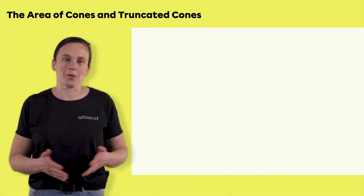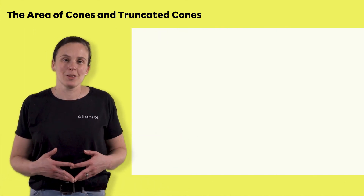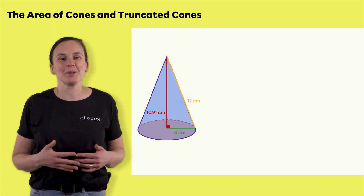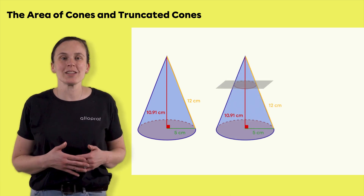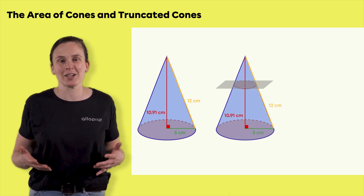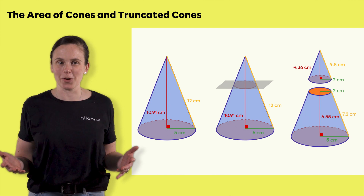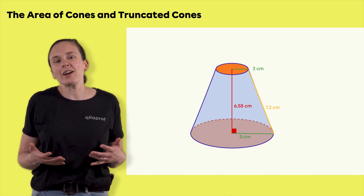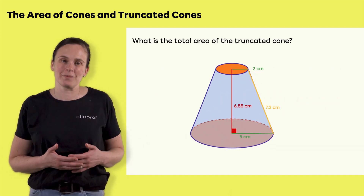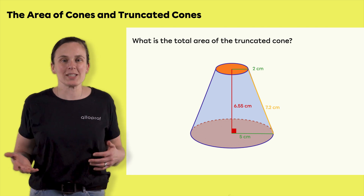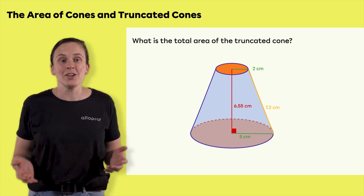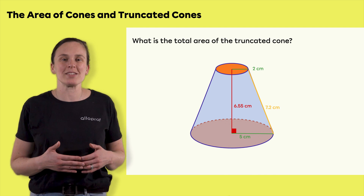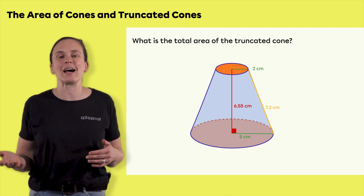Let's look at a second example. We will cut a cone using a plane parallel to the base, removing the top, and creating a truncated cone. You are asked to find the total area of the truncated cone. If you examine it closely, you will see that it is made up of two non-identical bases and a curved lateral face.